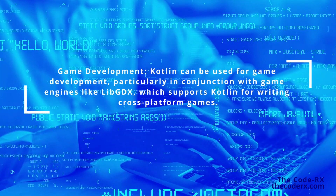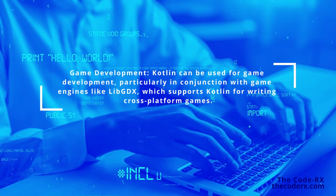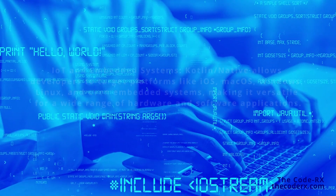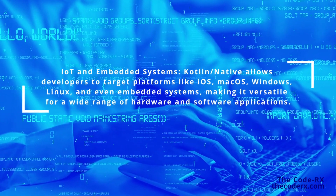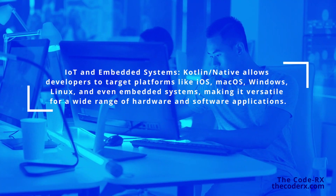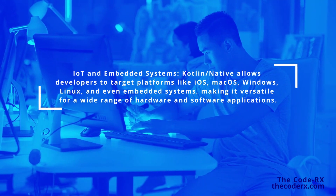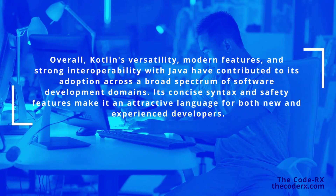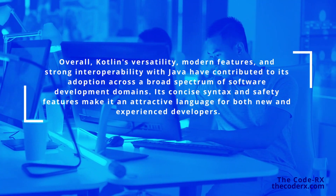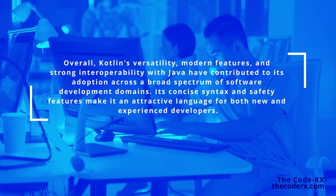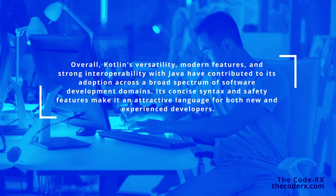Kotlin is also used in game development. It can be used in conjunction with game engines like LibGDX, which supports Kotlin for writing cross-platform games. Kotlin can also be used in embedded systems, allowing developers to target platforms like Apple OS, Mac OS, Windows, Linux, and even embedded systems, making it versatile for a wide range of hardware and software applications. Overall, Kotlin's versatility, modern features, and strong interoperability with Java have contributed to its adoption across a broad spectrum of software development domains, and its concise syntax and safety features make it an attractive language for both new and experienced developers.